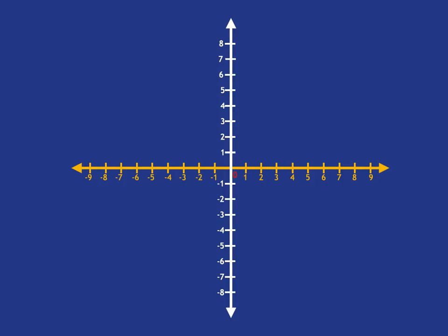And there we have what is called the Cartesian plane. The horizontal line going from left to right is labelled X — we call it the X axis. The line that goes up and down is labelled Y — we call it the Y axis, and it is the vertical axis. A very special point is that starting point where we began the numbering on both the horizontal and vertical axis. That zero point, we call the origin.